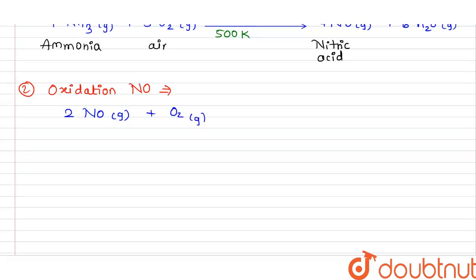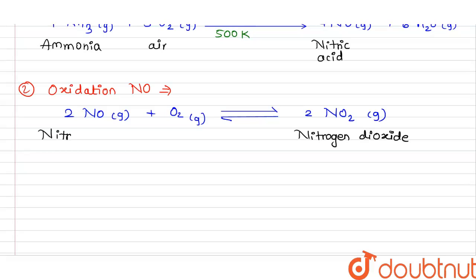We add oxygen in gaseous form and get a reversible reaction. The product formed is nitrogen dioxide (NO2) in gaseous form. So 2 NO + O2 reversibly gives 2 NO2.